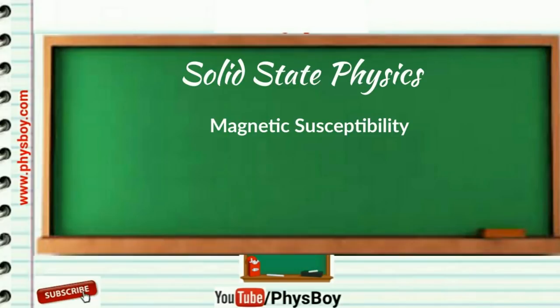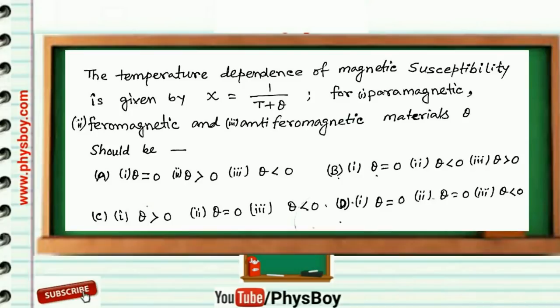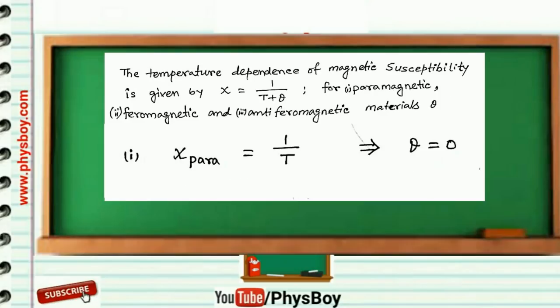The problem was: the temperature dependence of magnetic susceptibility is given by chi equals 1 over T plus theta. You have to find the range of theta for paramagnetic, ferromagnetic, and antiferromagnetic materials. Susceptibility for paramagnetic material varies as 1 over T.